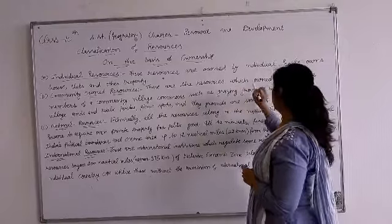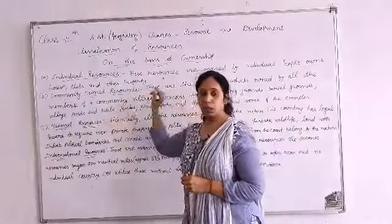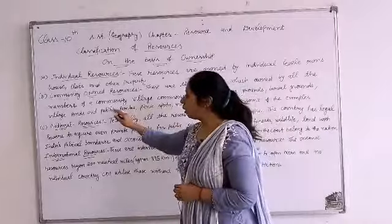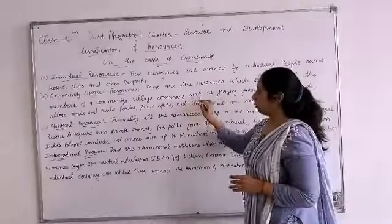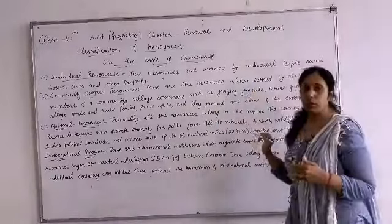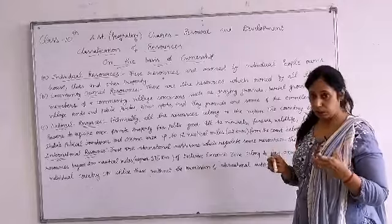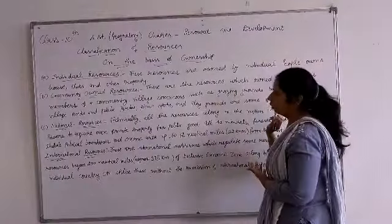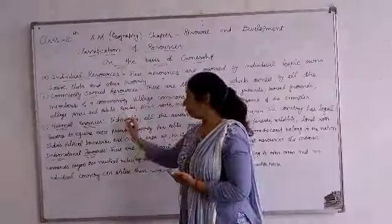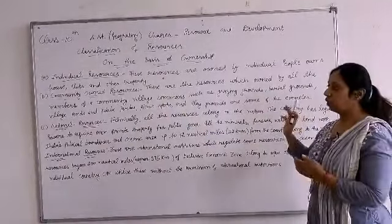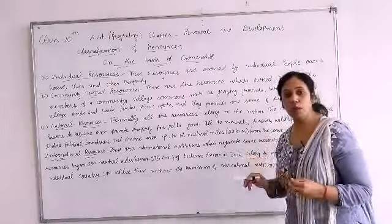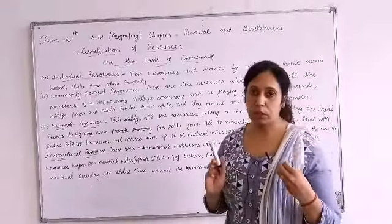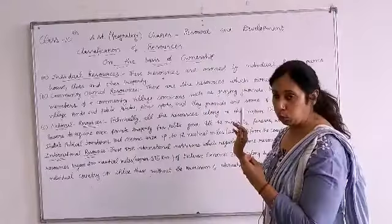Community owned resources are resources which are owned by all the members of a community. For village commons such as grazing grounds — where animals go to graze and eat grass — burial grounds, village ponds, and public parks, picnic spots, and playgrounds are some examples. These are places owned by all members of a community; no single individual has exclusive rights over them.